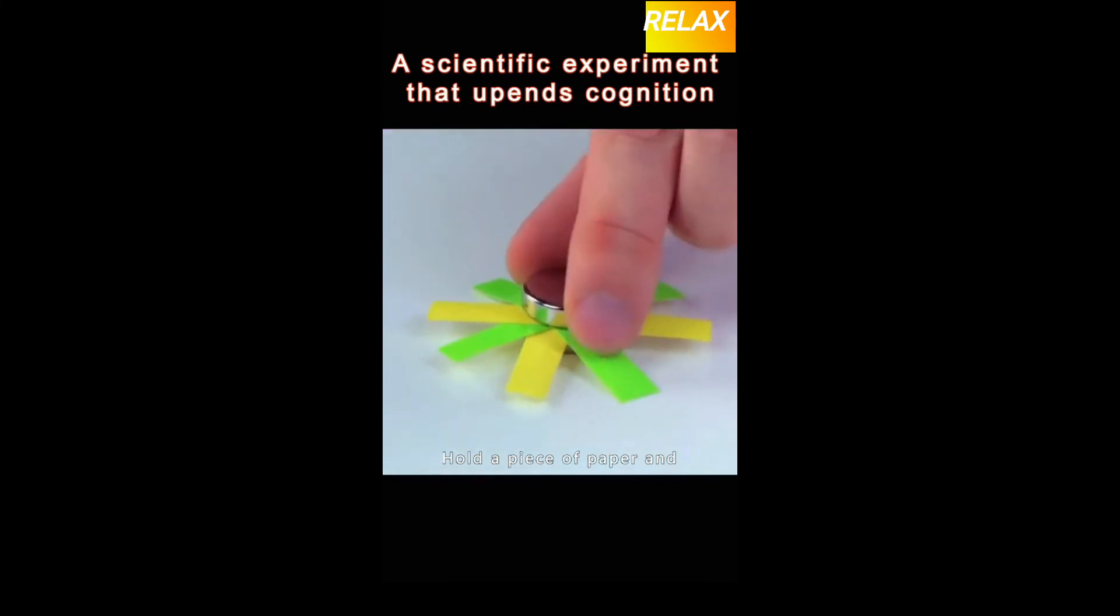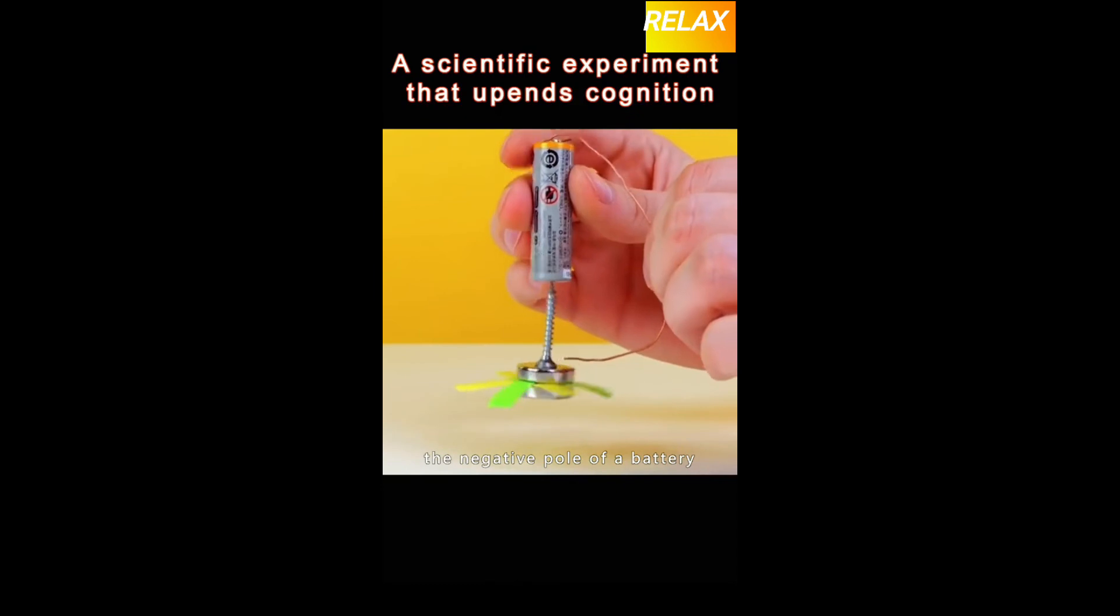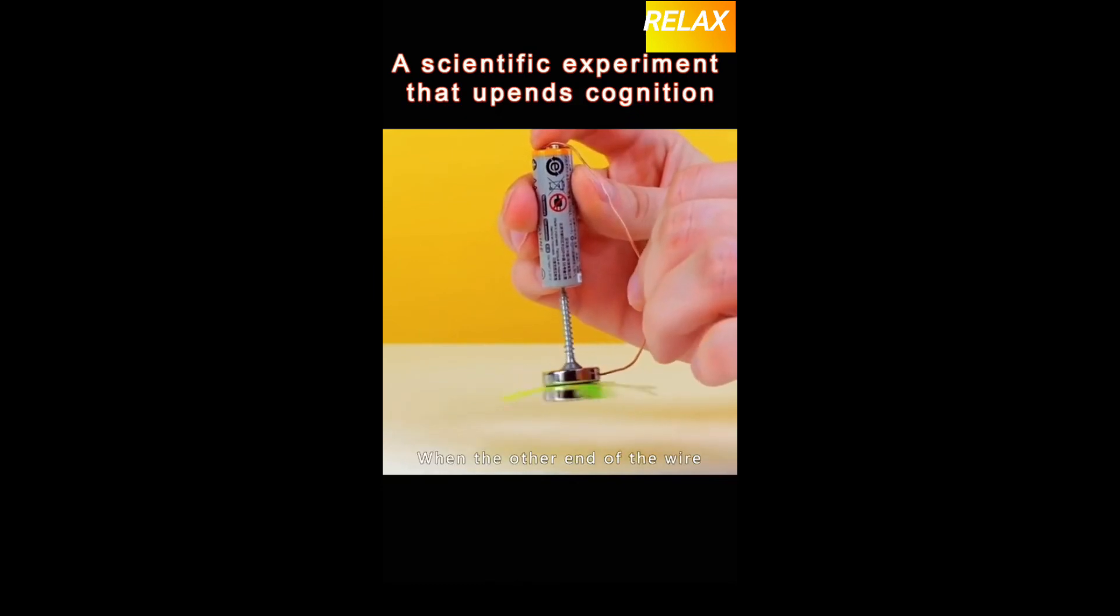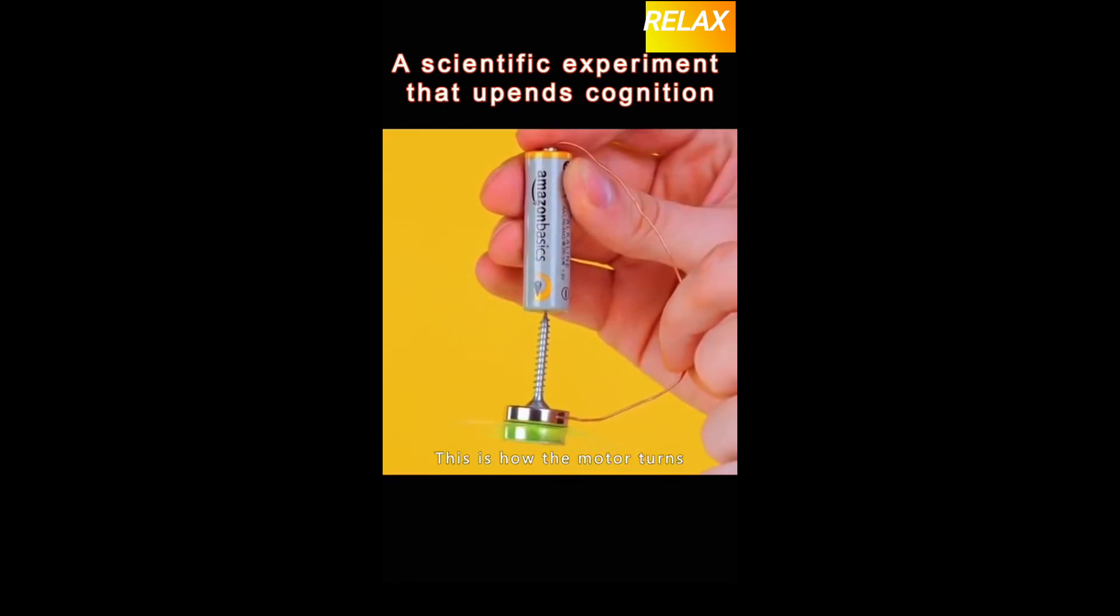Hold a piece of paper and a screw between two magnets. Draw up the screw with the negative pole of a battery. Positive connection lead. When the other end of the wire contacts the magnet to form a loop, the propeller is spinning very fast. This is how the motor turns.